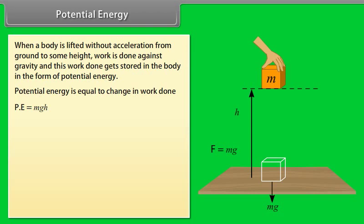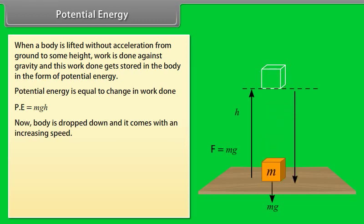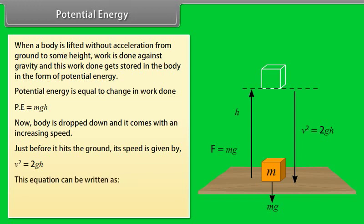Potential energy is equal to change in work done, so potential energy is equal to mgh. Now body is dropped down and it comes with an increasing speed. Just before it hits the ground, its speed is given by V square is equal to 2gh. This equation can be written as half mv square equals to mgh.